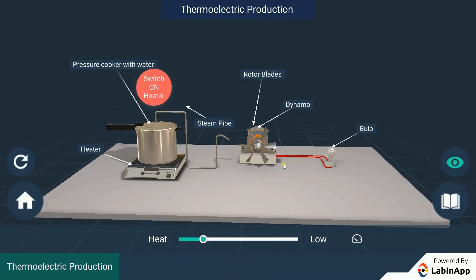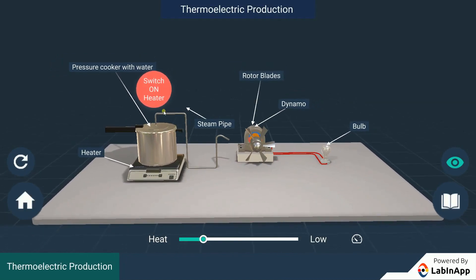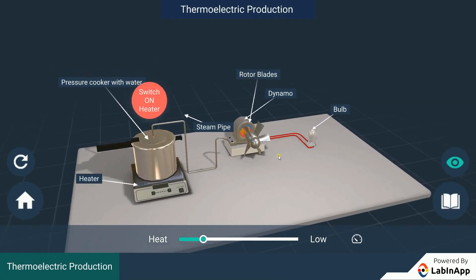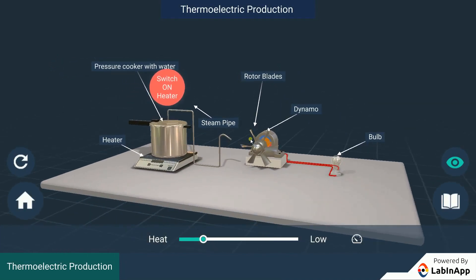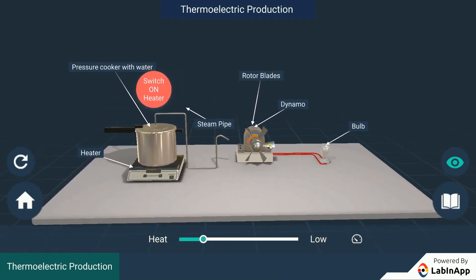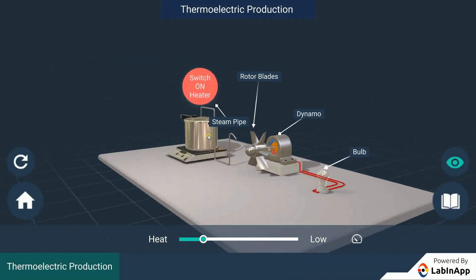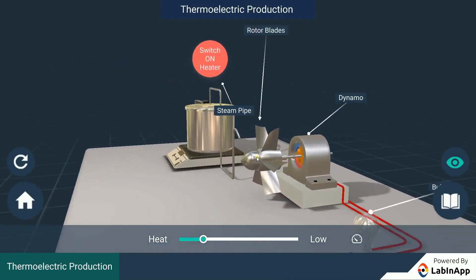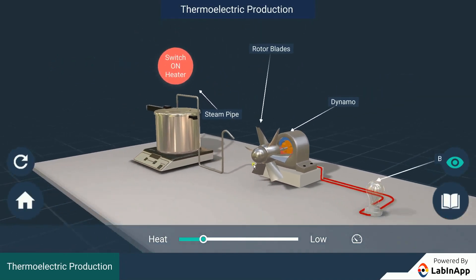A steam pipe is connected to the top of the cooker where the pressure accumulated in the cooker passes out upon heating. A small turbine and dynamo are connected with a bulb in series and placed near the end of the steam pipe.